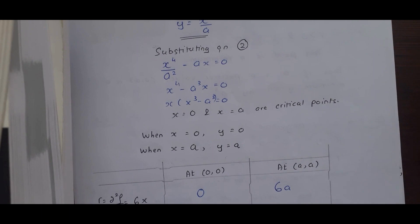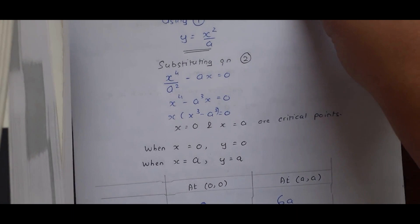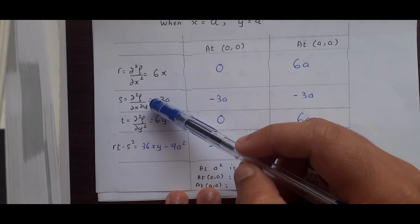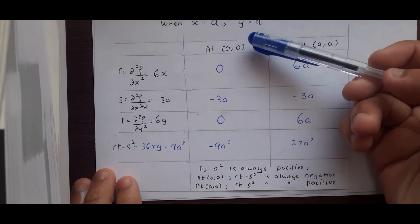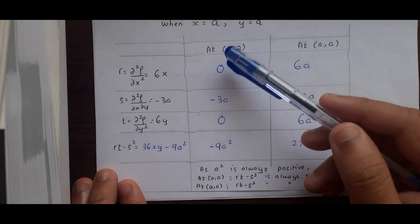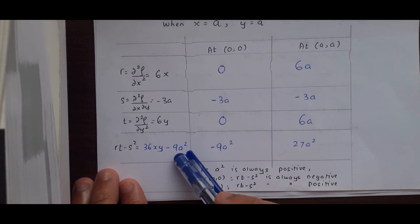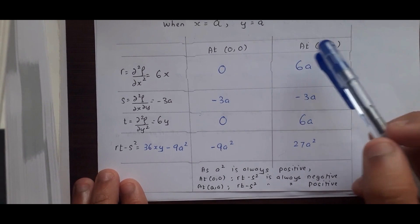When x = 0, y = x²/a gives y = 0. When x = a, y = a. So our two points are (0, 0) and (a, a). Now r = 6x, s = −3a (mixed derivative), and t = 6y. So rt − s² = 6x · 6y − (−3a)² = 36xy − 9a². At (0, 0): r = 0, t = 0, and rt − s² = −9a². At (a, a): r = 6a, t = 6a, and rt − s² = 36a² − 9a² = 27a².